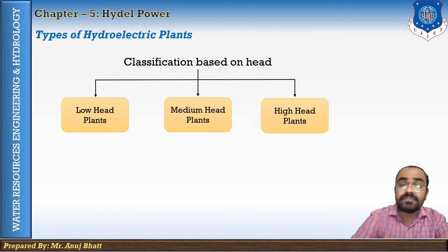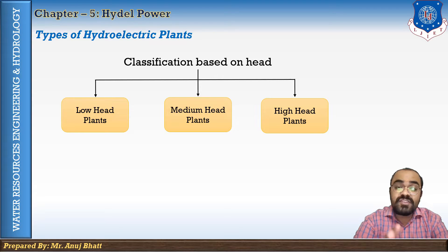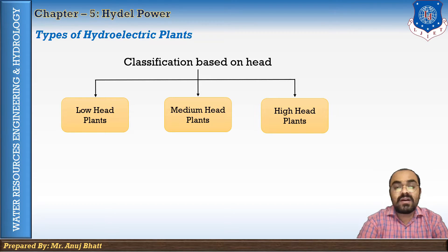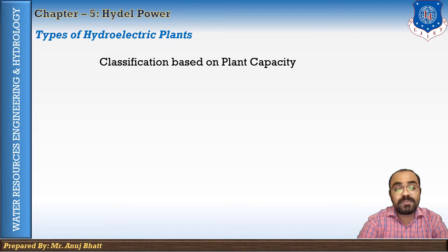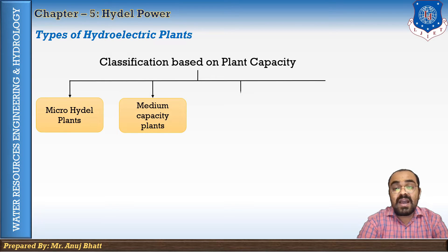A high head plant uses a head of more than 60 meters. A dam of sufficient height is constructed to store water, to ensure supplies throughout the year, and to attain sufficient head. Now let's discuss the classification based on plant capacity.